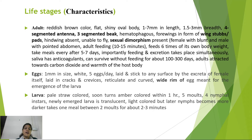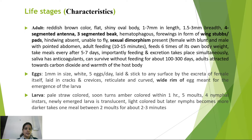The adult bed bug is reddish-brown, flat, shiny, oval, measuring 7 mm in length and 3 mm in width. It has four-segmented antennae and a three-segmented beak. Wings are present only as wing stubs or pads; the hind wing is absent, so they cannot fly. Sexual dimorphism: female abdomen is blunt, male abdomen is pointed. Adults feed for 10–15 minutes, consuming six times their body weight, and secrete anticoagulants. They are attracted to carbon dioxide and body warmth.